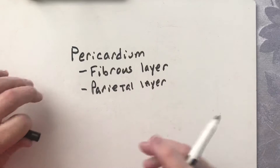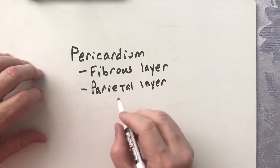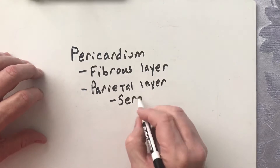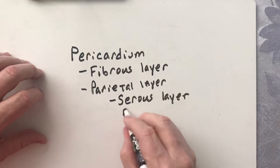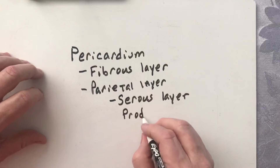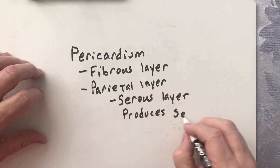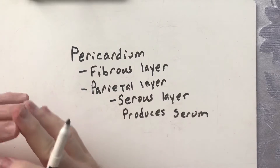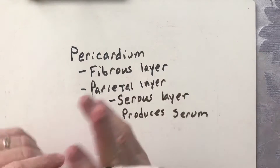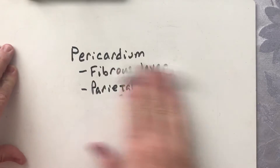The parietal layer actually produces a serum — it's also called the serous layer. The function of this serum is to decrease friction between the pericardial sac and the heart, specifically between the pericardial sac and the epicardium.